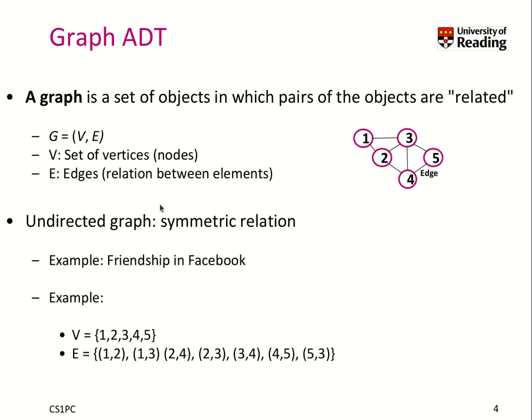This graph here is an undirected graph, which means it has a symmetric relationship. So if you go from vertex 1 to vertex 2, it's the same as you can go from vertex 2 to vertex 1.